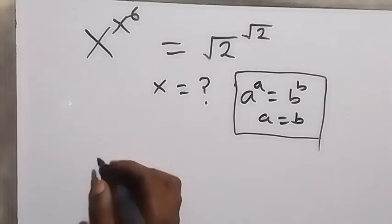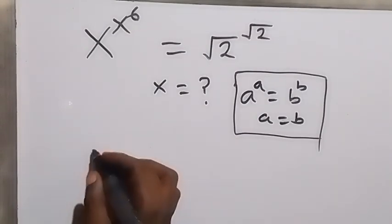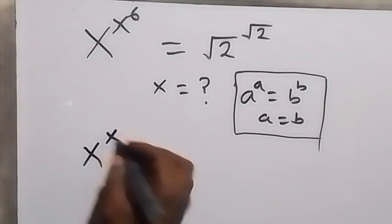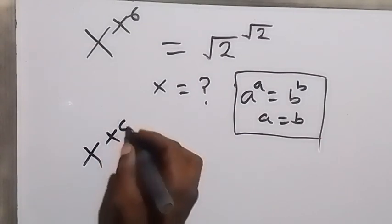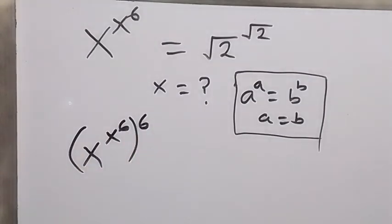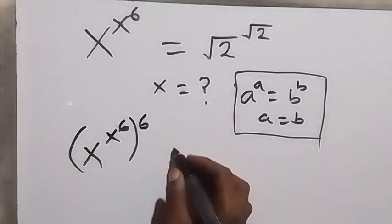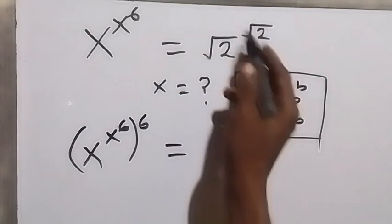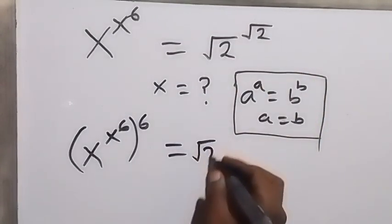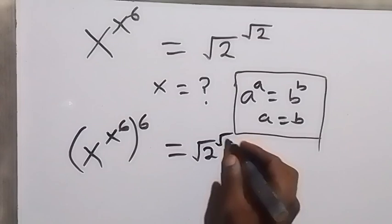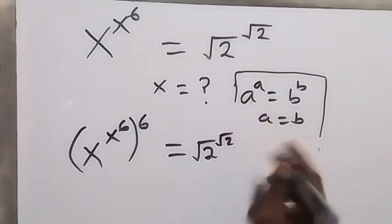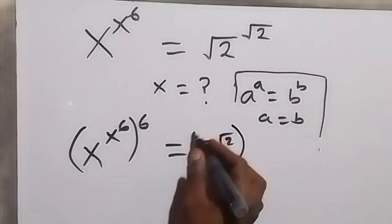So now, from here we can raise both sides to the power of 6. We have x raised to power x raised to power 6, and we raise this to the power of 6. On this side as well, we have root 2 raised to power root 2, and we raise this to the power of 6 as well.